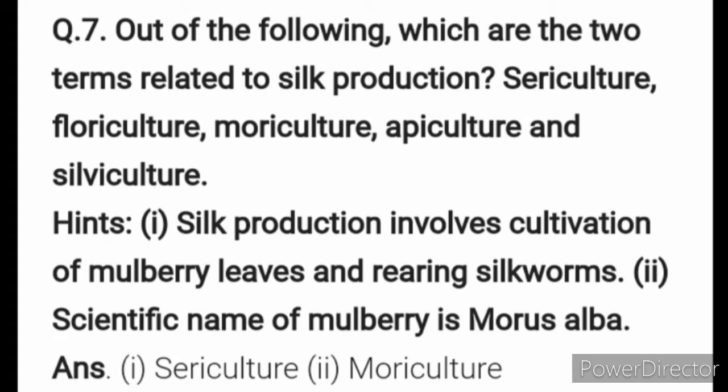Question number 7: Out of the following, which are the two terms related to silk production? The options are sericulture, floriculture, mauriculture, apiculture, and silviculture. Silk production involves cultivation of mulberry leaves and rearing silkworms. The scientific name of mulberry is Morus alba. The answer is sericulture and mauriculture.